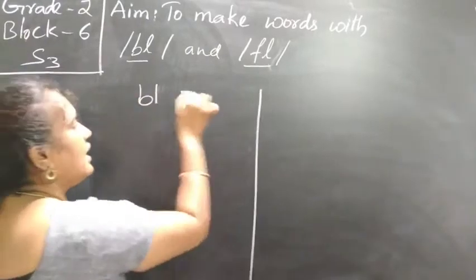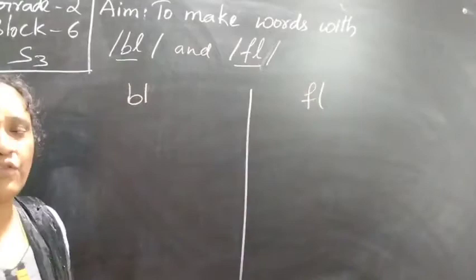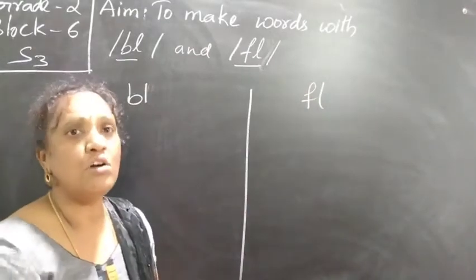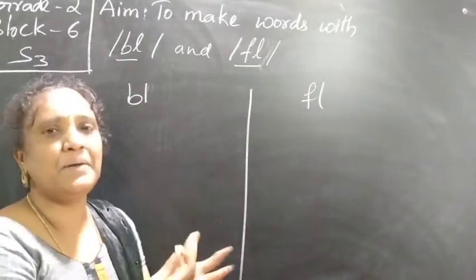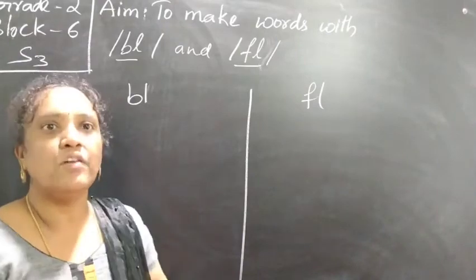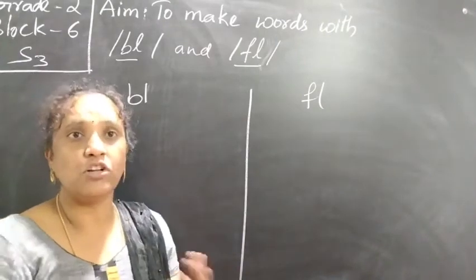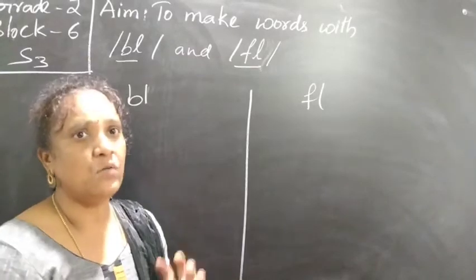So let us find. So bl and fl. Already we know many words. We want to recall them, even by seeing the picture. Sometimes we give the picture, we give an idea regarding something. So basing on that you want to find the word.